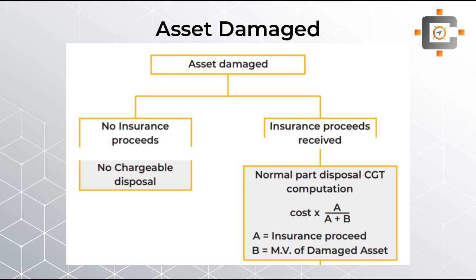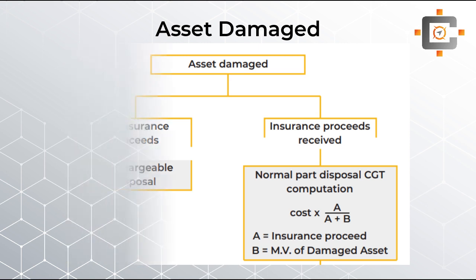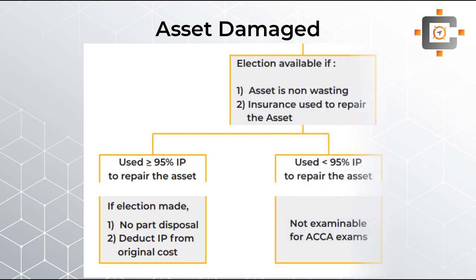However, there are situations where CGT implications can arise. First, check whether insurance was received on the damage. If no insurance was received, there is no chargeable disposal and no CGT. But if partial insurance proceeds are received, that is treated as a part disposal, applying the part disposal formula where A equals insurance proceeds and B equals market value of the damaged asset.